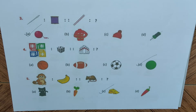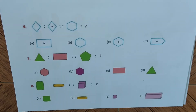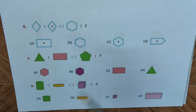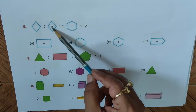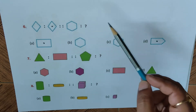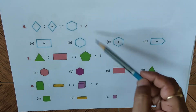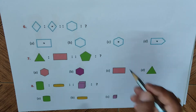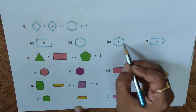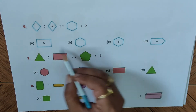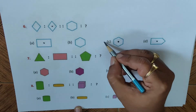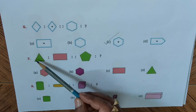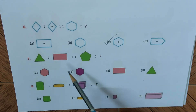Question number six: we have a diamond and then a diamond with a black circle in the middle. Similarly, we now have a hexagon — one, two, three, four, five, six sides. We have to find another hexagon with a circle in the middle. None of the other options match, so C is the right answer.